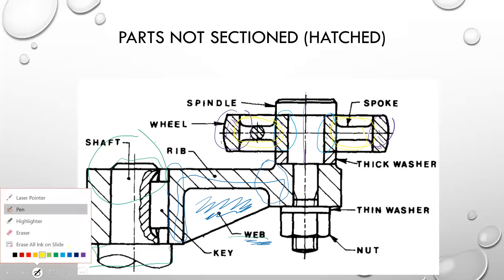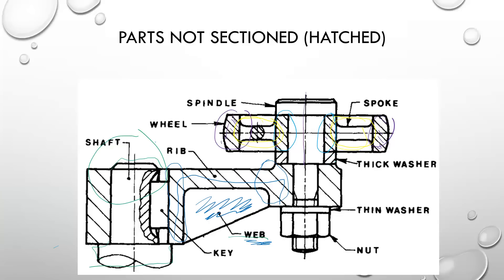The next part is a thick washer. If you section through a thick washer along its axis, you can section it. But the converse is true for thin washers — you cut through them but you do not section them, as no hatch lines are provided. When you cut along the axis of a spindle, you do not have to section it. The same goes for a nut, and also for a key. If you cut along the axis of the key, you do not section it.